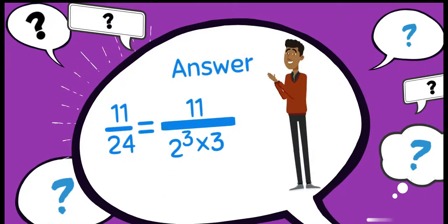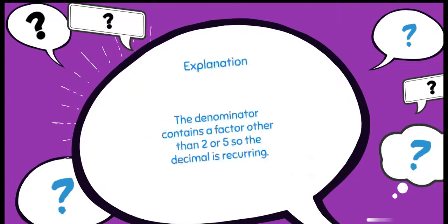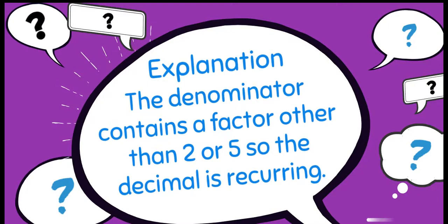The answer is 11 over 2 cubed times 3. Explanation: The denominator contains a factor other than 2 or 5, so the decimal is recurring.